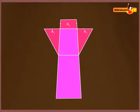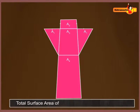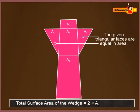If a1, a2, a3, and a4 are the areas of the faces of the wedge, then according to the definition, total surface area of the wedge is equal to 2 multiplied by a1 plus a2 plus a3 plus a4.